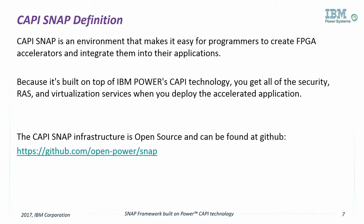Beginning with Power 8, our servers introduced a base set of technology for enhanced use of acceleration. This includes FPGAs and ASICs with CAPI and, of course, our NVLink GPU bus. We believe that heterogeneous computing will become ubiquitous in data centers and we are leading this effort with the OpenPower and OpenCAPI Foundation. Open is key as innovations will come from many partners and our platform will enable these advancements.